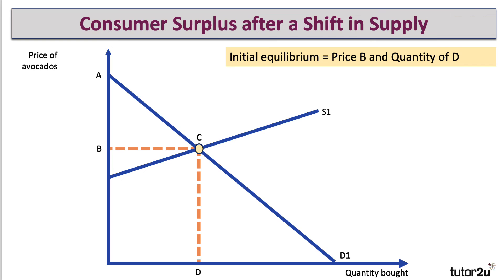Let's take the example of a farmer that's producing avocados. Here's the initial equilibrium: the price is B and the quantity is D, and so the consumer surplus is the area A, B, C.